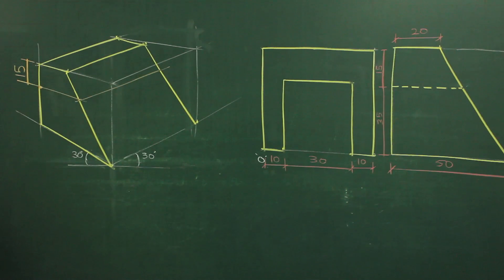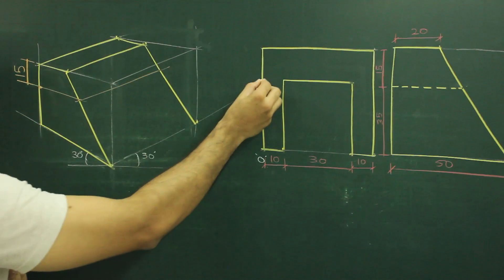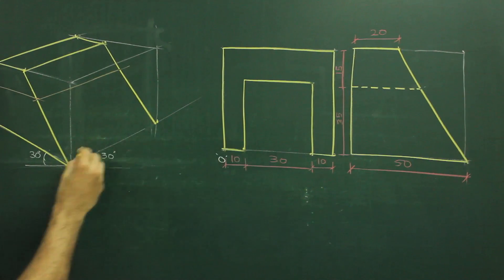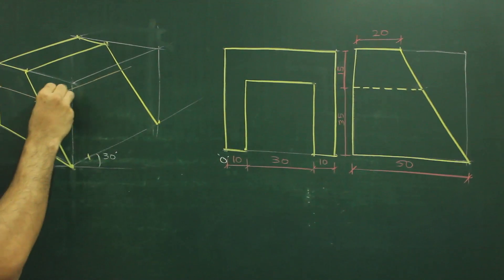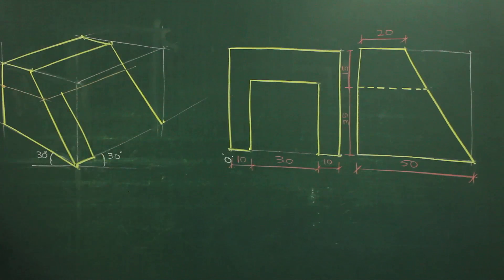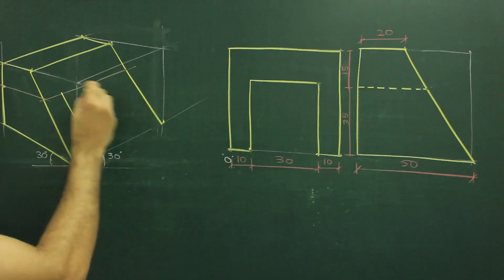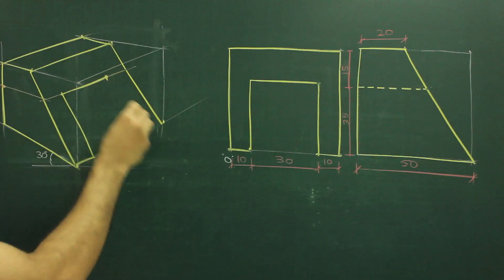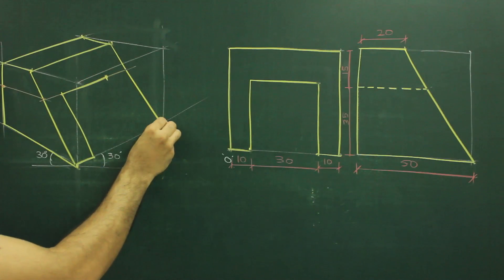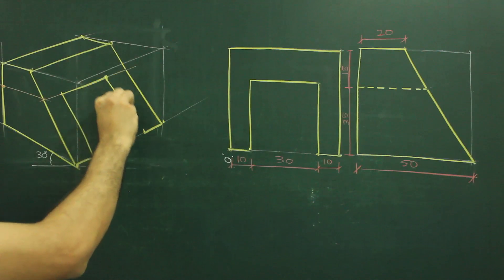And then if you see front view, how much is the is 10. So I can mark 10 from here and I can join, so I will get this. Same way, how much is this, 30. So we mark 30. How much is this, 10. And we will join this.